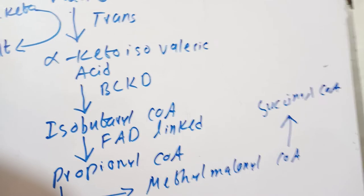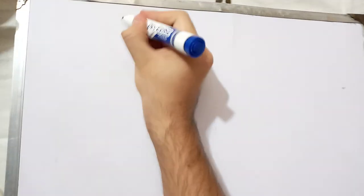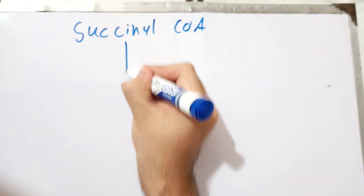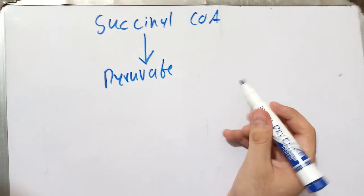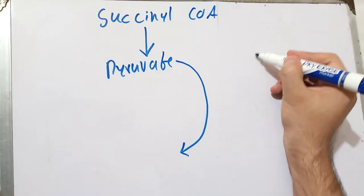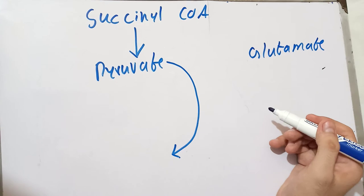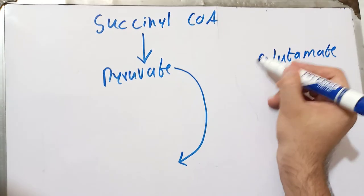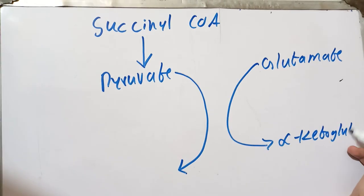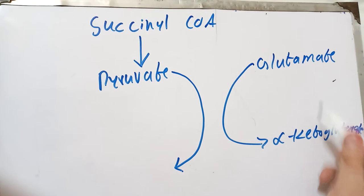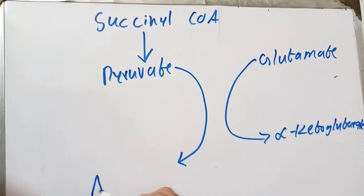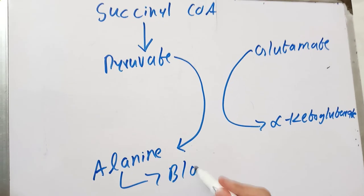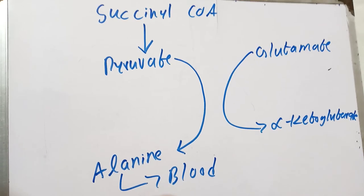Now let's talk about the metabolism of succinyl-CoA and its relationship with the glucose-alanine cycle. Succinyl-CoA will enter the Krebs cycle and will ultimately be converted into pyruvate through the Krebs cycle and gluconeogenesis. This pyruvate does not have any amino group; the amino group donated to pyruvate comes from the glutamate formed in the first reaction of branched-chain amino acid metabolism. The glutamate donates its amino group to pyruvate, is converted back into alpha-ketoglutarate, which is reused, and pyruvate is converted into alanine. This alanine is dumped into the blood, travels to the liver, and contributes to the glucose-alanine cycle.